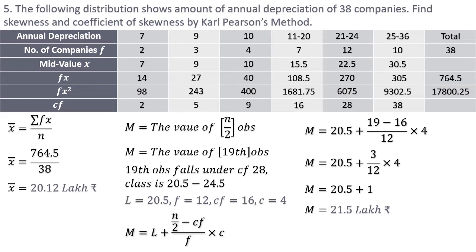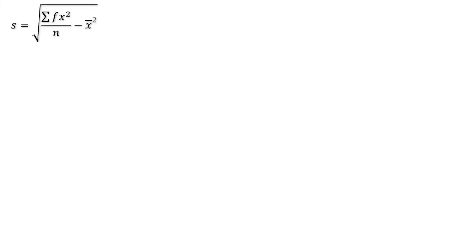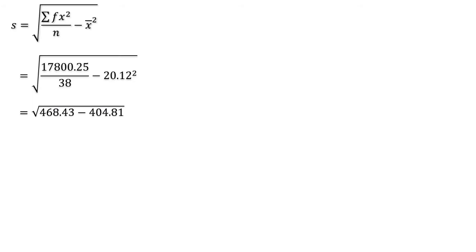Next I calculate the standard deviation using the fx² value. SD = √(Σfx²/n − x̄²). Σfx² is 17,800.25, n is 38, x̄ is 20.12. The division gives 468.43, the square of x̄ is 404.81, the difference is 63.62, and the square root gives SD = 7.98 lakh rupees. I put this into the skewness formula: 3 × (x̄ − M).